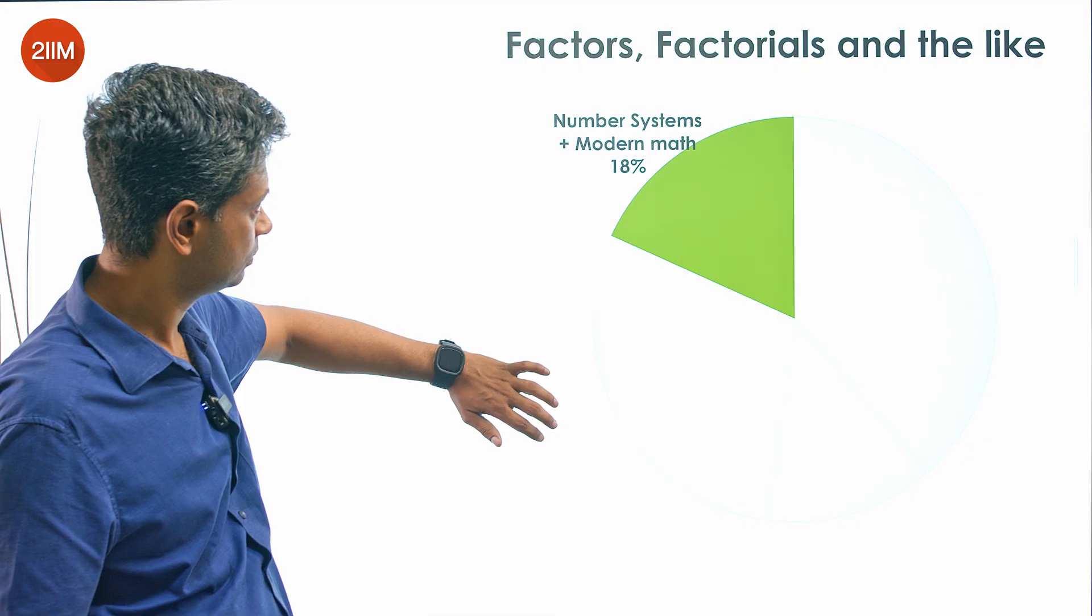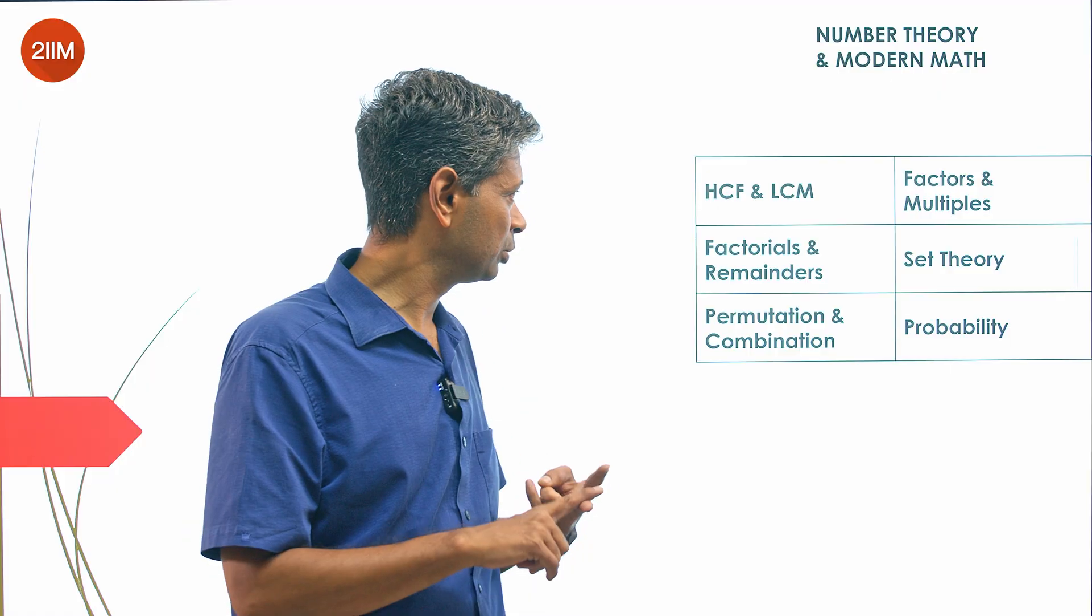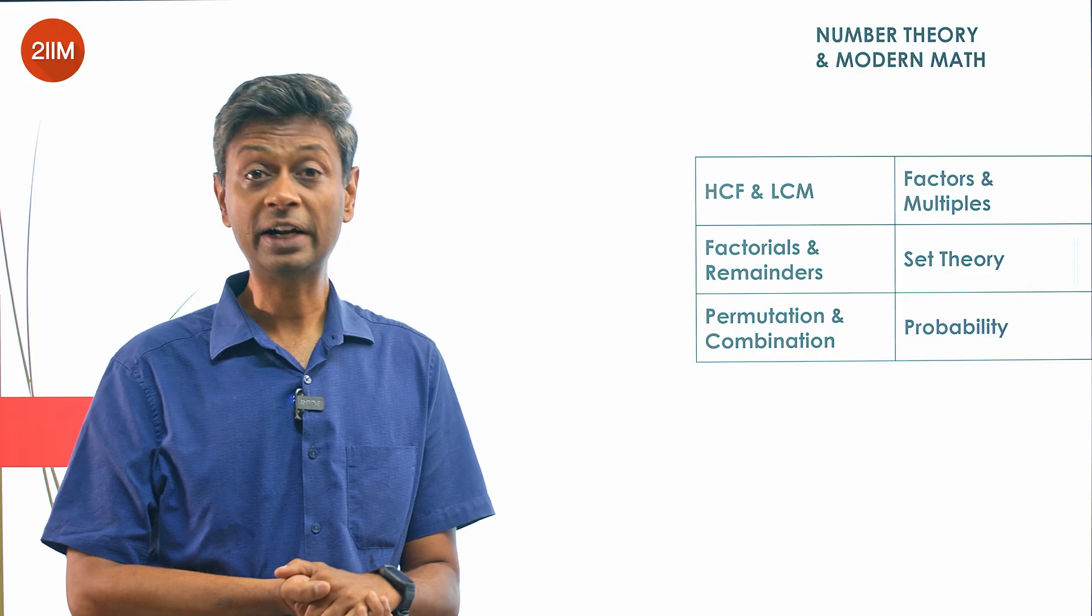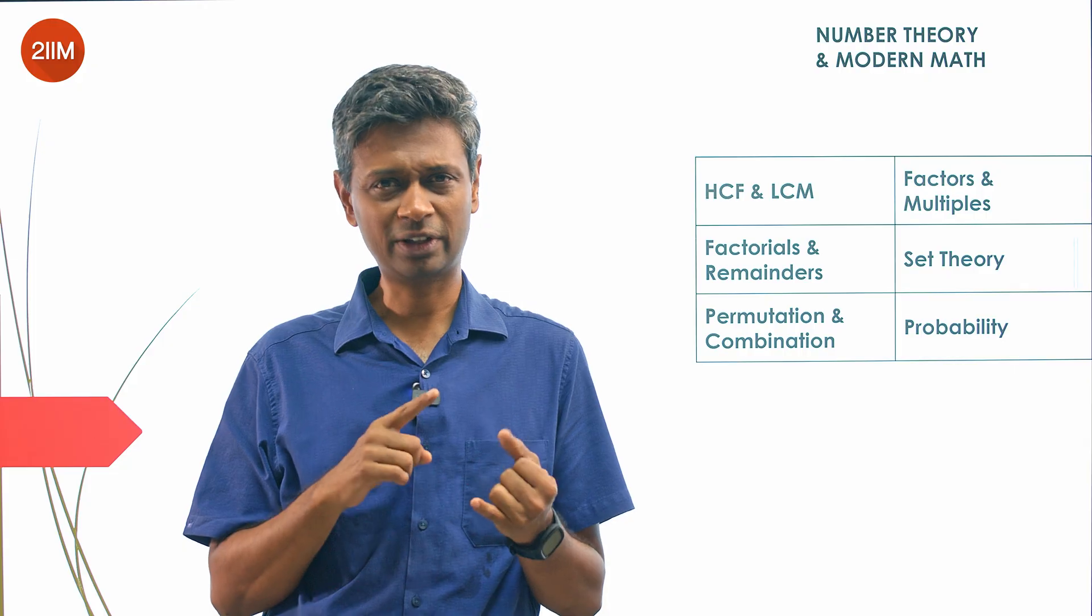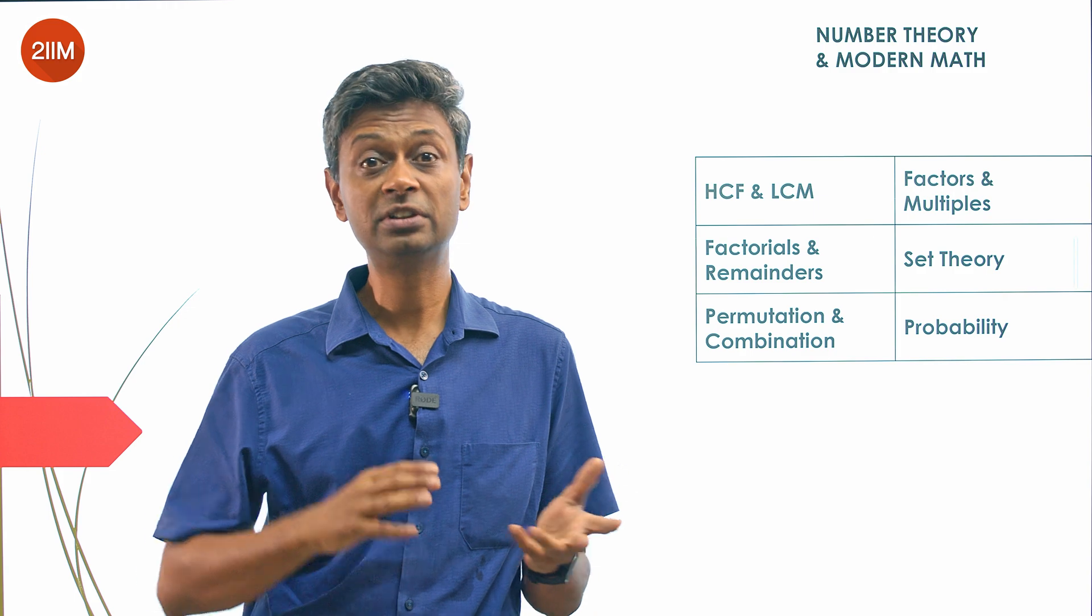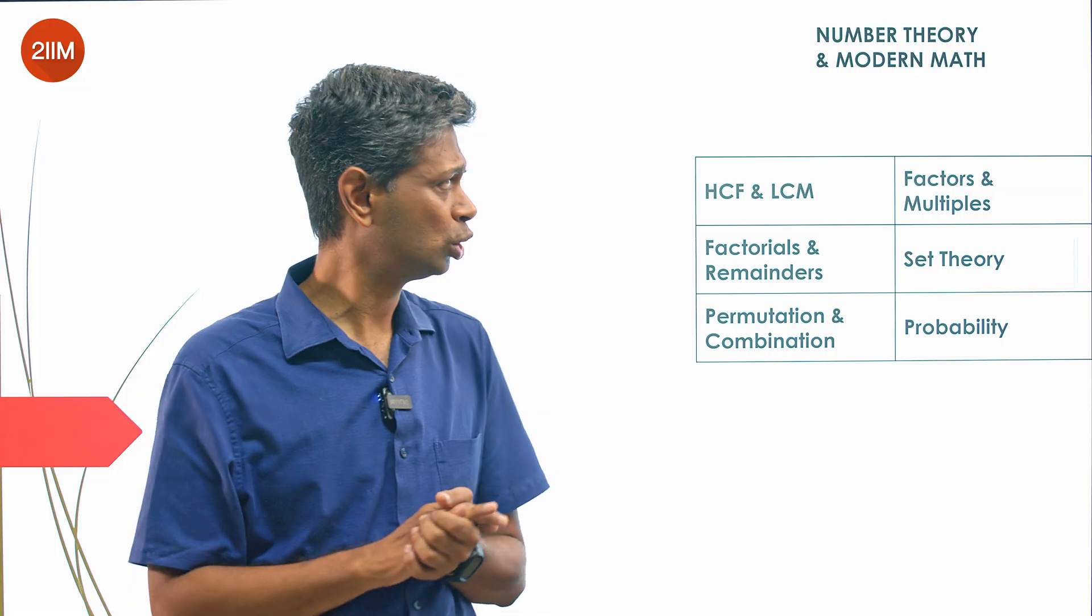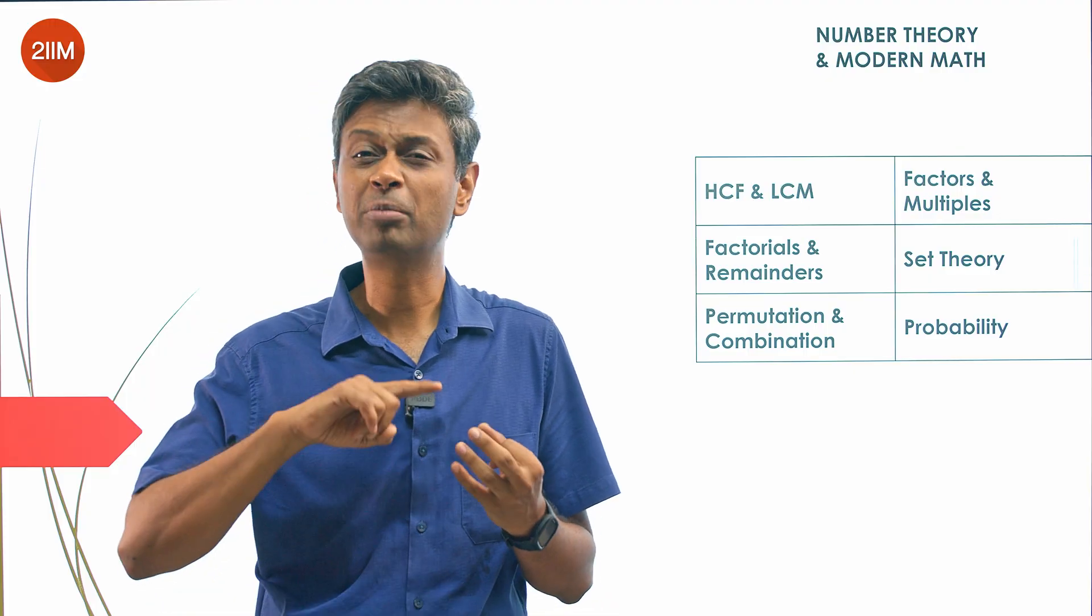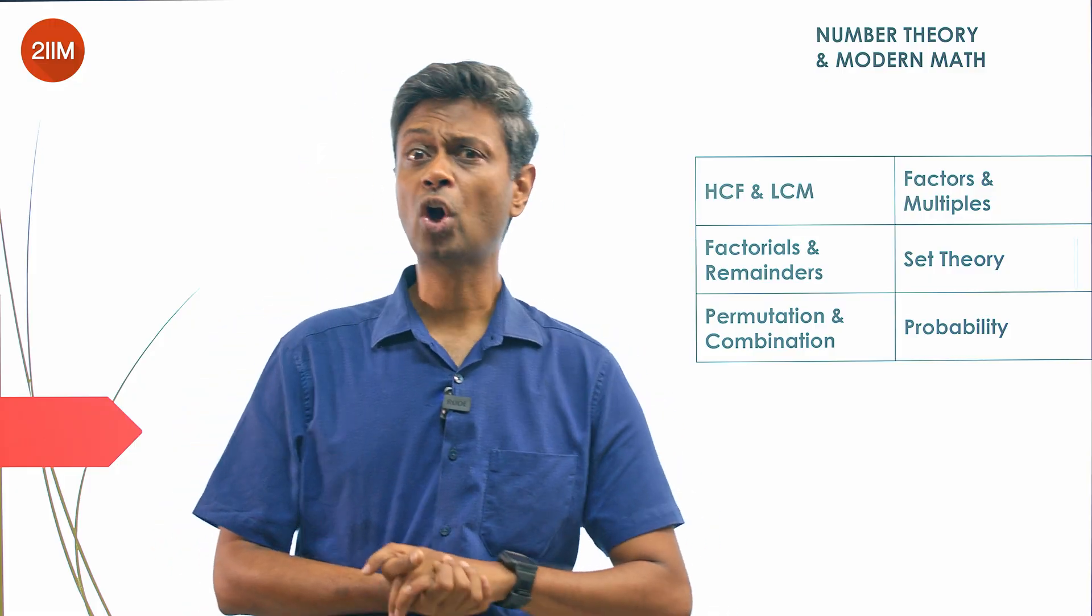Let's dive in: HCF and LCM, factors and multiples, factorials and remainders. Number systems is learned iteratively, so know the basic frameworks - prime numbers, composite numbers, factors, number of factors, product of factors, sum of factors, fractions, decimals, terminating decimals, rational, irrational. Then move on to factorials, remainders. Remainders is a giant chunk. Factorials and different bases, incorporate all of them.